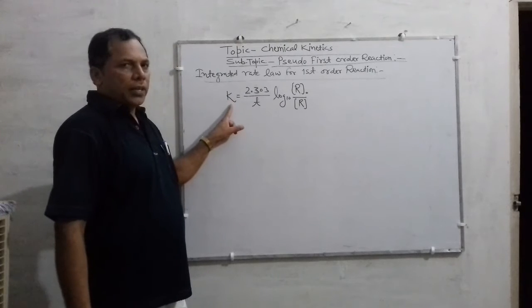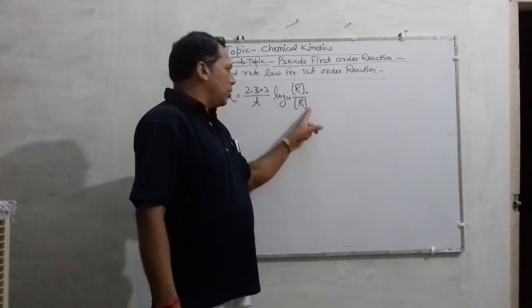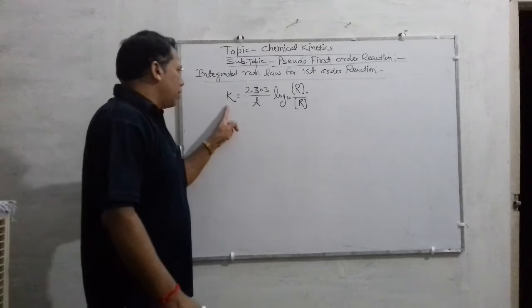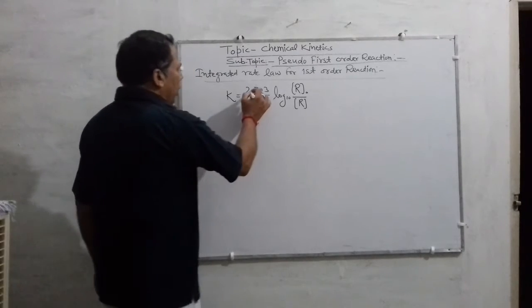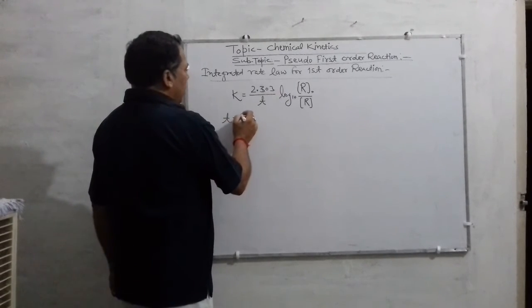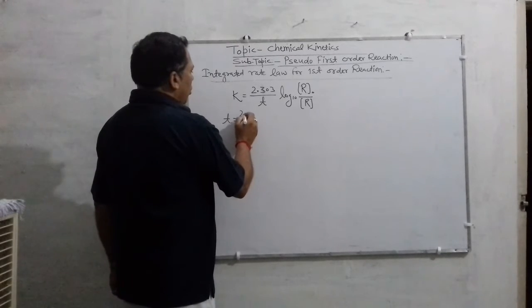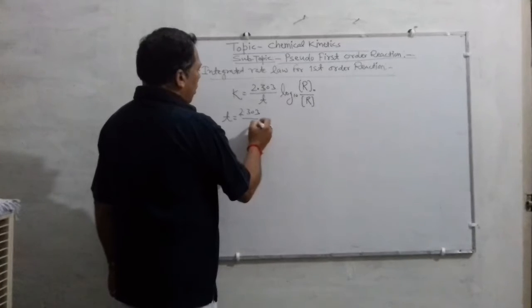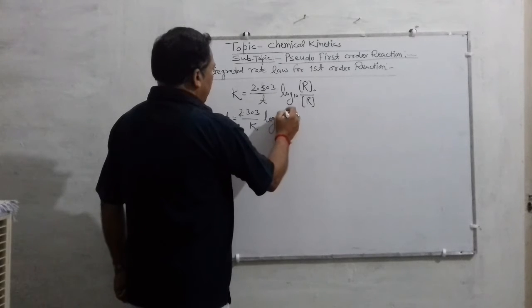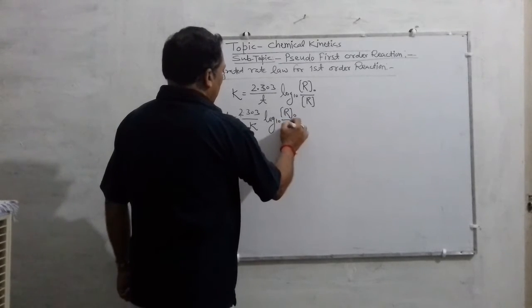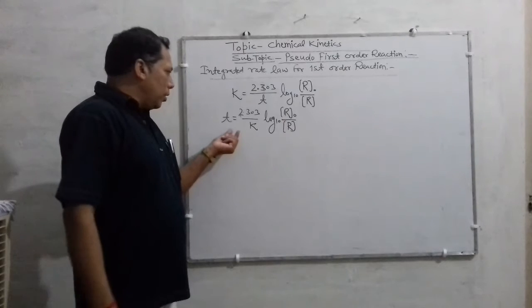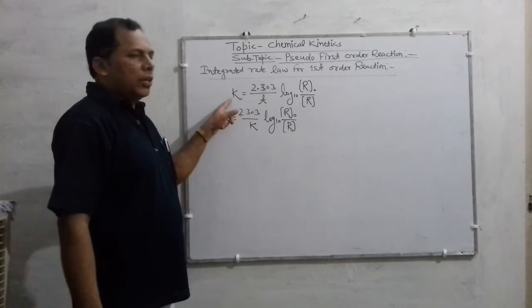Here, K is the rate constant, T is the time, and R₀ and R are the initial and final concentrations of the reactants respectively. This expression can also be written as: T equals 2.303 upon K, into log base 10, of the initial concentration divided by the final concentration of the reactant. We have to relate this expression with half-life period.